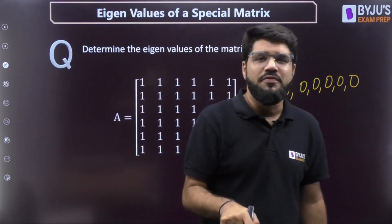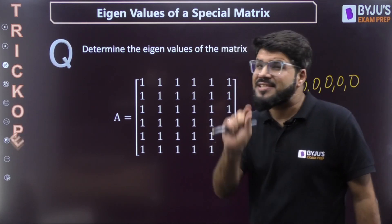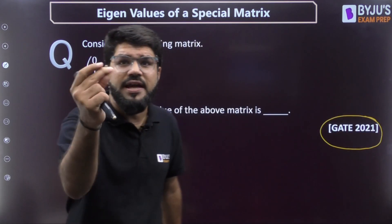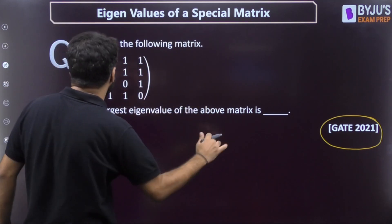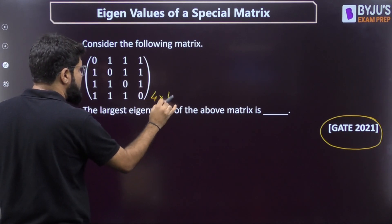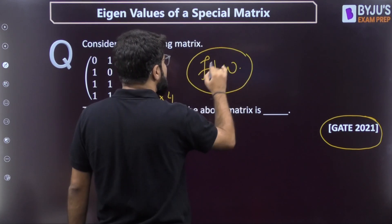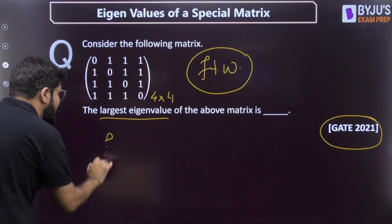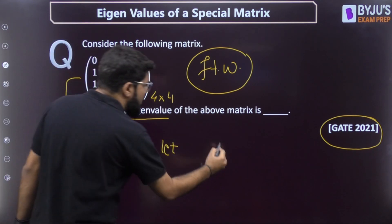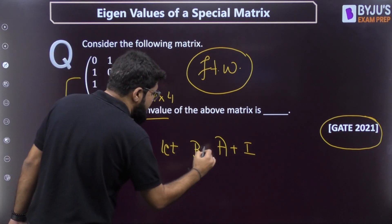Like all other Trickopedia videos, here is a homework problem — I want you to comment your answer and we'll reply whether it's correct. It's a GATE 2021 question with a slight twist. The question: consider the 4×4 matrix with zeros on the diagonal and ones elsewhere — what is the largest eigenvalue? Now, all elements are not one, so here is a hint: suppose this matrix is A. Add the identity matrix to it, so all diagonal elements also become one, and call that B.